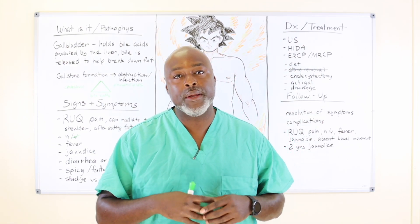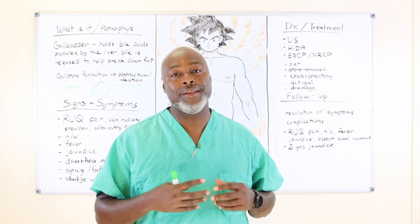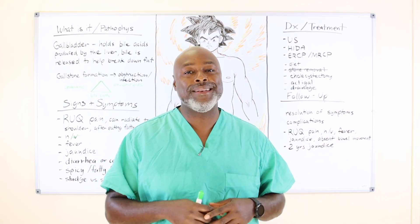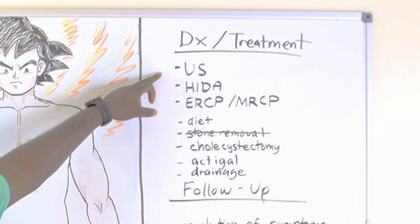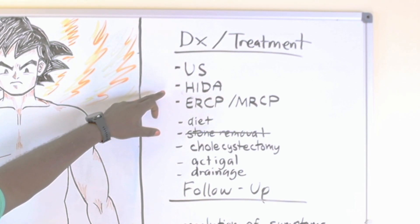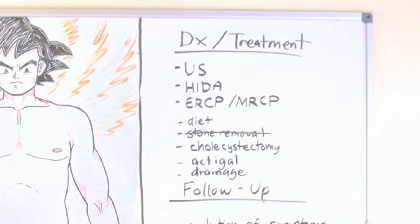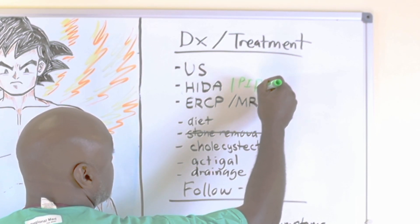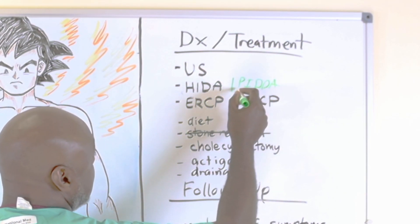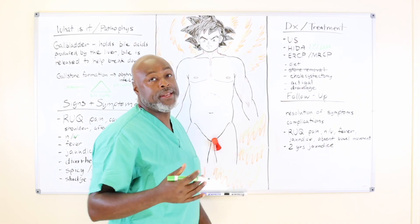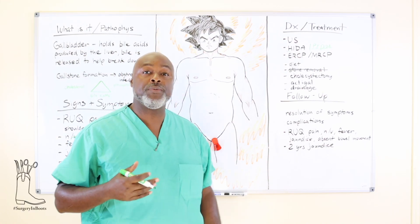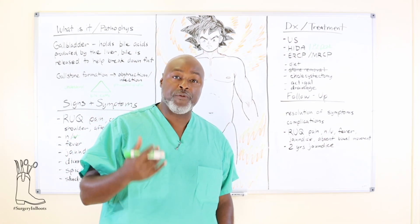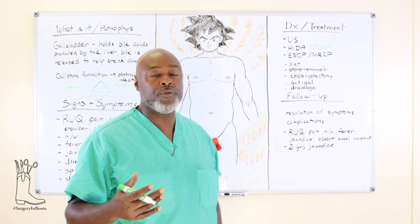As far as determining whether you have a bad gallbladder that needs to come out, there are a couple of diagnostic tests. Ultrasound is a good place to start — that's usually what most people have in the United States. The other test is called a HIDA scan; you'll also see it called a PIPIDA scan in some places. The PIP and the HI are just the radioactive isotopes they use to perform the test, but they're the same test performed the same way.